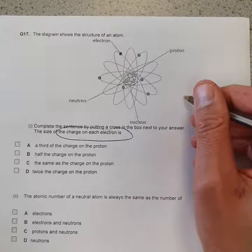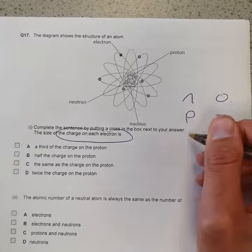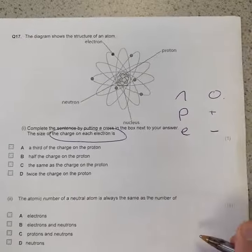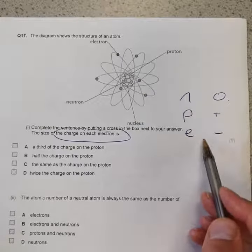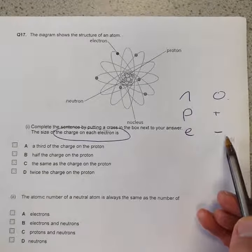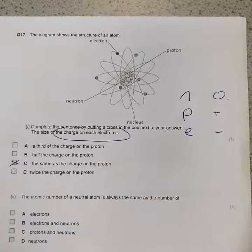Well, you might remember that neutrons have zero charge, protons are positive and electrons are negative. So the amount of charge, if this is plus one, that's minus one. So it's the same amount, just the opposite sign. So it's the same as the charge on the proton, it's going to be C there.